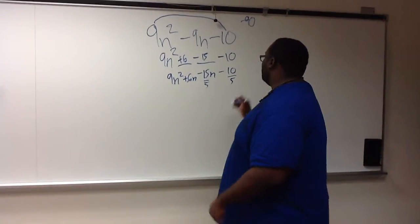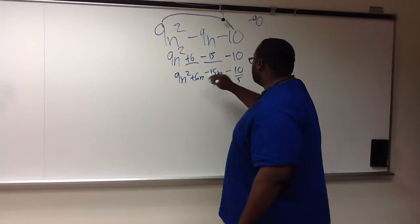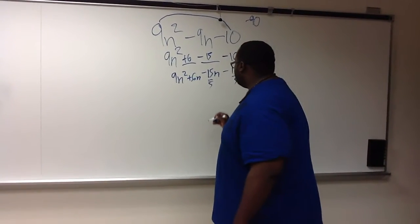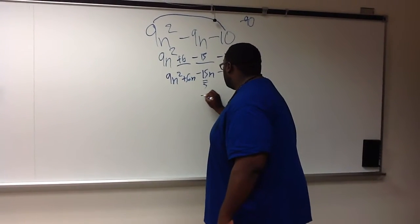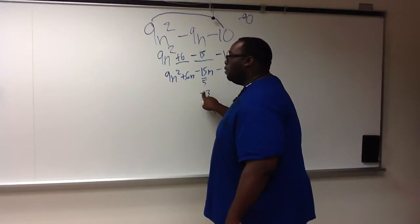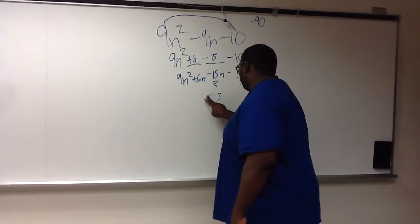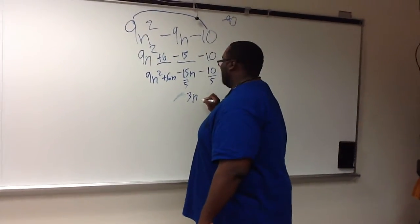So when we say 15 and minus 10, you could divide both of those sides by 5, and you have now 3n plus 2.